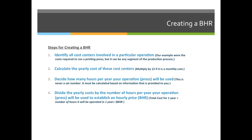Step four: divide the yearly cost by the number of hours per year you're in operation. Take the total cost for the entire year and divide it by 300, 600, or however many hours you're in operation, and you'll get the budgeted hourly rate for that cost center.